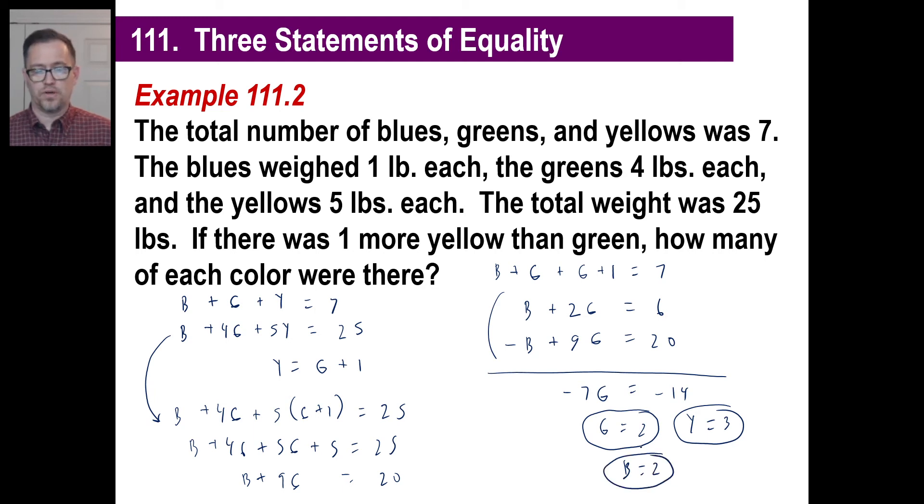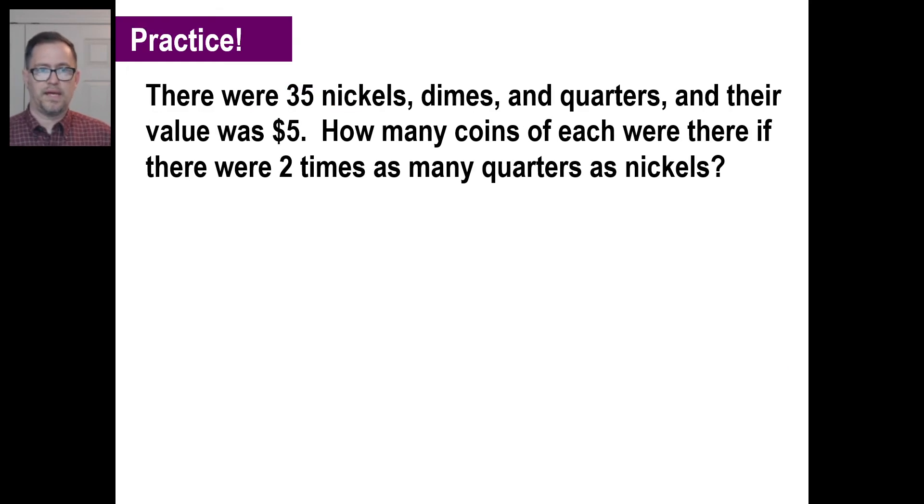And if that is true, then there's seven of them all together. So two plus three is five, so the blue is going to have to be also two. We can check this just to make sure. The blues weighed one pound each, so the total weight is 2 times one or two. The greens are four each, that's 2 times four, that's going to be eight. The yellows weighed five pounds each. So there are three of those, that's going to be 15. Well, 8 plus 15 is 25. There you go. And that's how you do those. Try the practice problem and pause it.